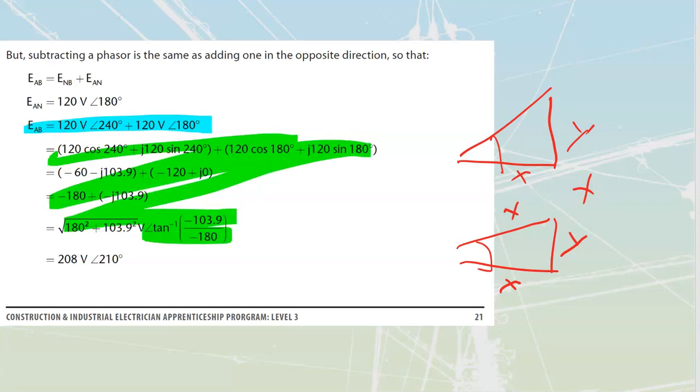Now, there's a very good chance that you don't remember much of the trig, because you were probably taught this in grade 10 or grade 11, and this is an electrical course, not a mathematics course. So we want to focus on actually getting the answer, and the answer that we're looking for is this down here at the bottom: 208 volts at 210 degrees.